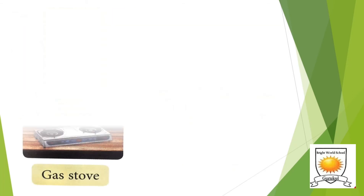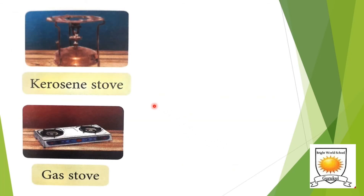The two commonly used stoves are kerosene stoves and gas stoves. In the kerosene stove, kerosene is used as fuel. Gas stoves are used in many houses for cooking. The cylinder, which is the source of fuel, is filled with liquefied petroleum gas, LPG. The LPG flows from the cylinder to the stove through a tube.